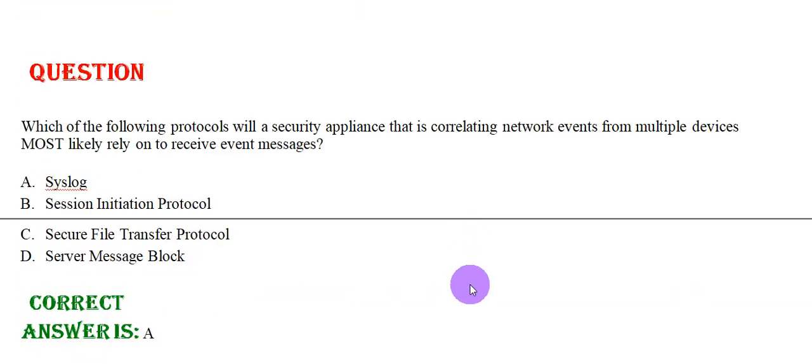Which of the following protocols will a security appliance that is correlating network events from multiple devices most likely rely on to receive event messages? Option A: Syslog. Option B: Session Initiation Protocol. Option C: Secure File Transfer Protocol. Option D: Server Message Block. The correct answer is Option A.